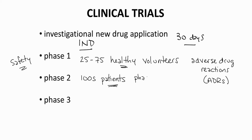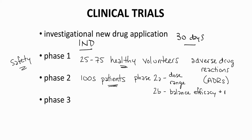Phase IIa explores a range of doses. Phase IIb trials focus on a narrow dosing range to balance efficacy and any adverse drug reactions. Phase IIb trials are often called pivotal trials.